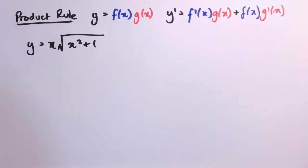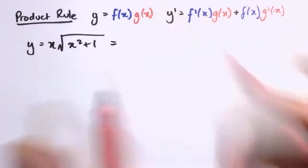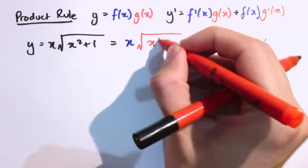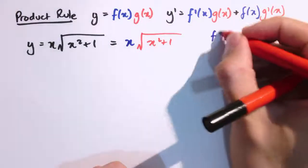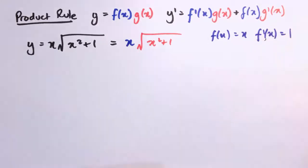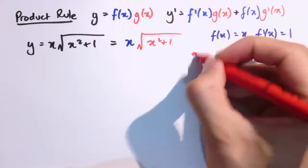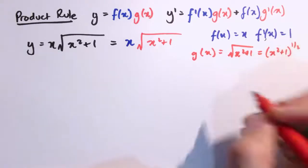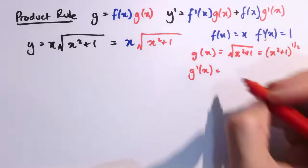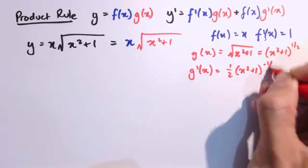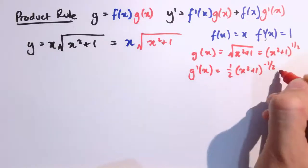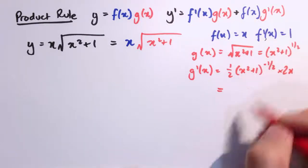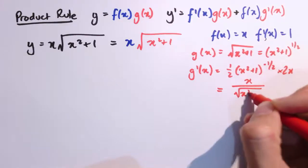For another example, y equals x times the square root of (x squared plus 1). This is a product of two different functions: the first function is just x and the second is the square root of (x squared plus 1). So f of x equals x, f dashed of x equals 1, and g of x equals (x squared plus 1) to the half. Applying the chain rule to differentiate g gives one half times (x squared plus 1) to the minus one half, multiplied by the derivative of the inside function 2x. The 2 and the half cancel, giving x divided by the square root of (x squared plus 1).